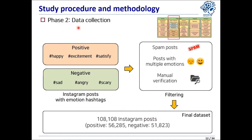In the second phase, we collected Instagram posts using emotion hashtags — three positive and three negative hashtags that are widely used in prior studies. We collected around 20,000 posts per emotion, then filtered out spam and posts with multiple emotions, and manually tracked all posts. After this process, we had around 108,000 posts as our final dataset.